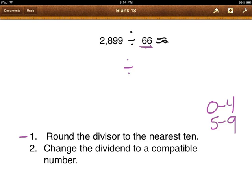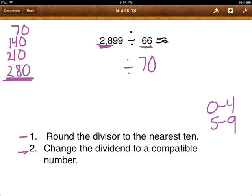Now I have to change the dividend to a compatible number. So now I'm going to list my multiples of 70. And when I get somewhere near 2,800, I'll know that I'm somewhere close. So I have 70 times 1 is 70. 70 times 2, 140. 70 times 3 would be 210. Getting there. Times 4 would be 280. Oh, I'm going to stop there. Look at that. So I'm going to change the dividend to 2,800.